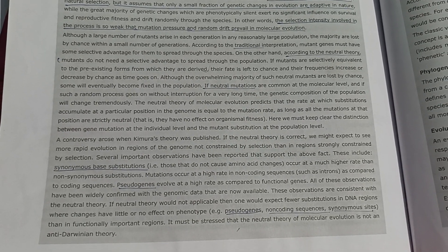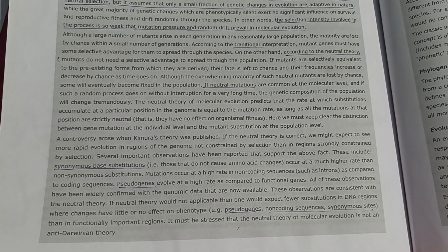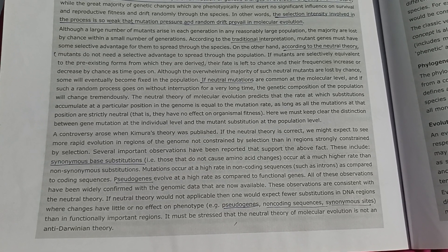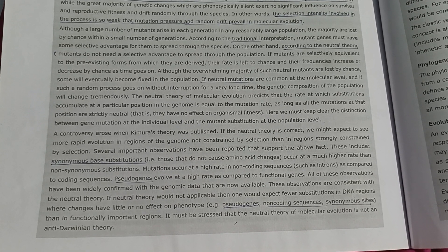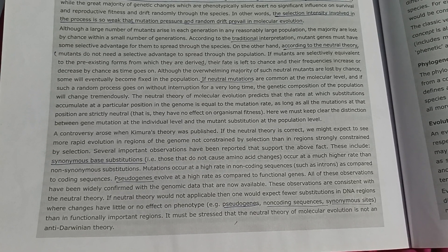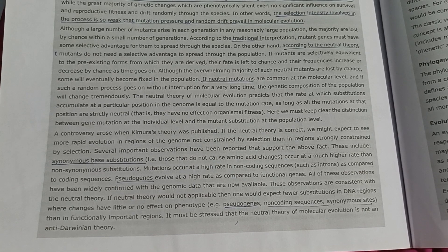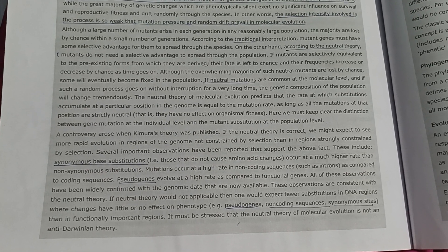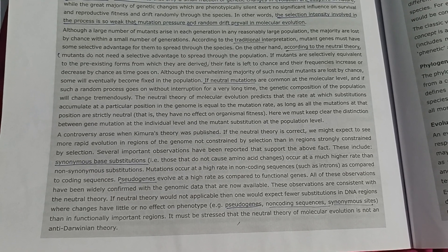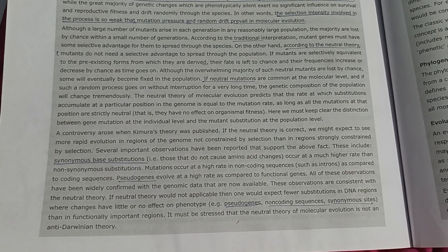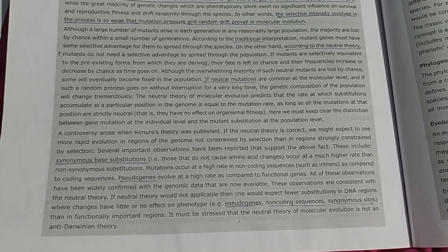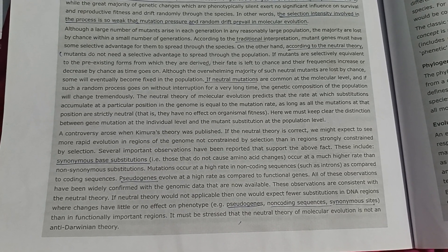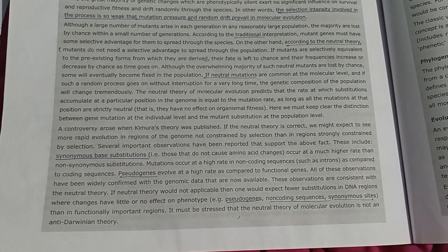According to the Neutral Theory, mutants do not need a selective advantage to spread through the population. If mutants are selectively equivalent to the pre-existing forms from which they are derived, their fate is left to chance and their frequencies increase or decrease by chance as time goes on.